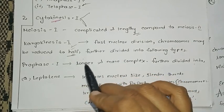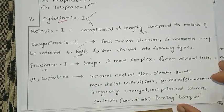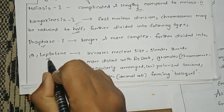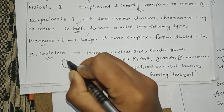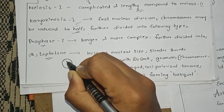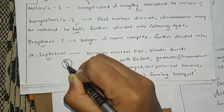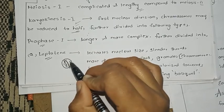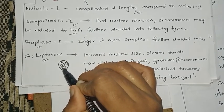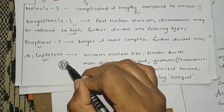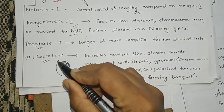For the first nuclear division, the first sub-stage is Leptotene. During Leptotene, the nuclear size increases, the DNA becomes double-stranded, and the threads appear as granules. The centrioles move to one side. This is Leptotene.